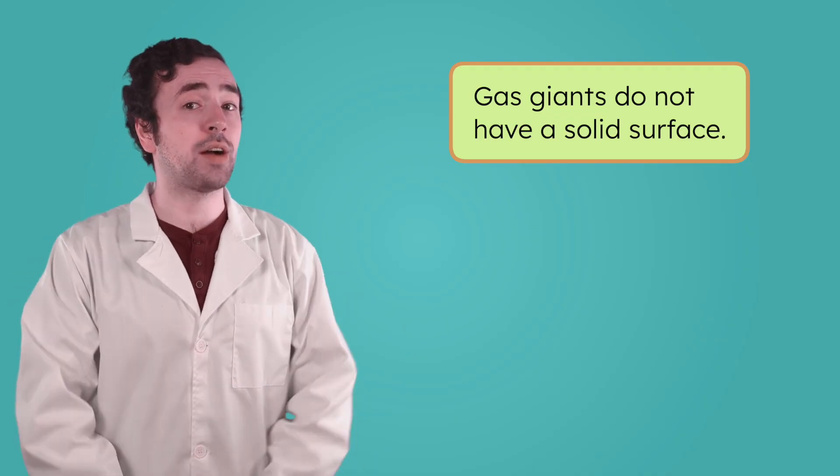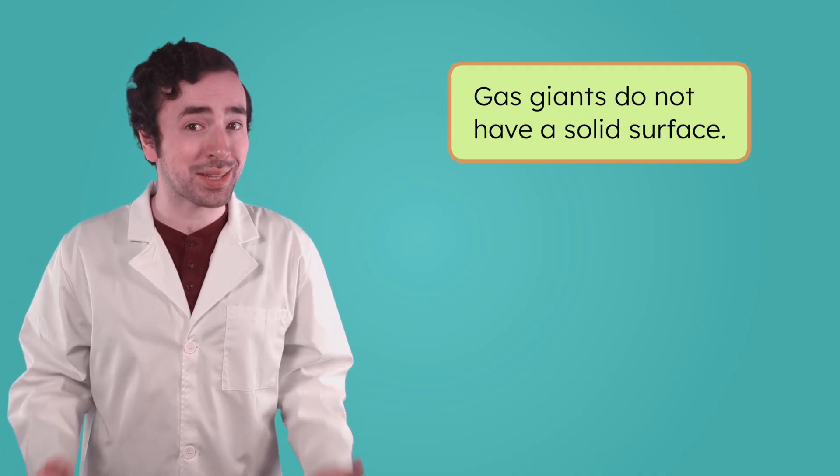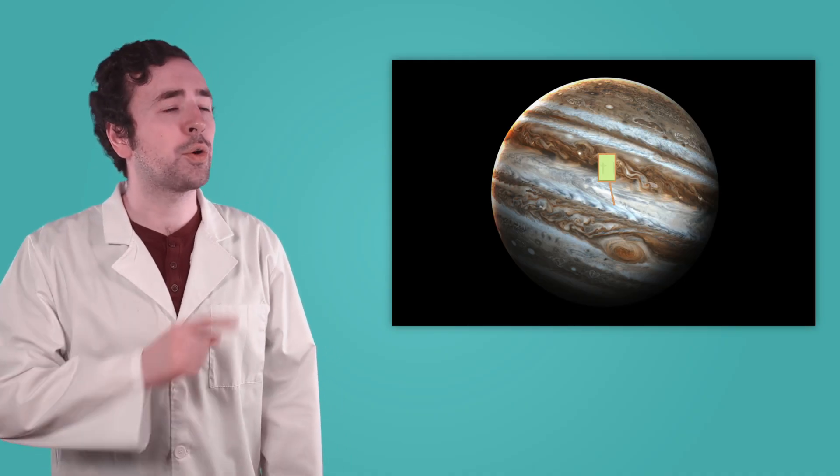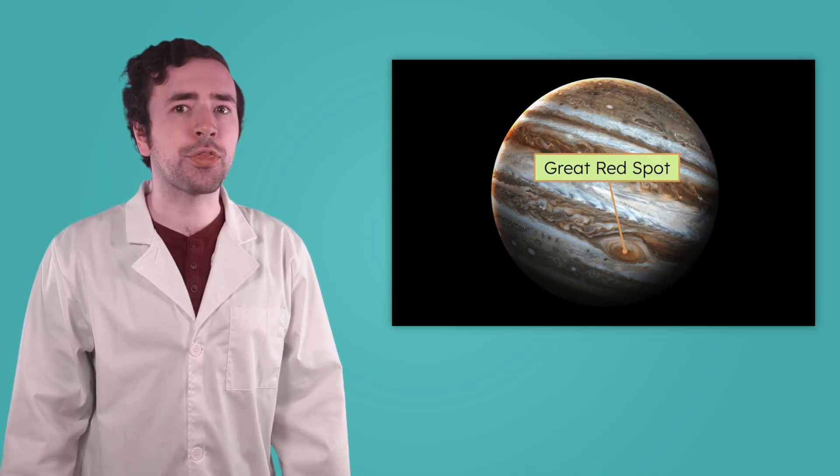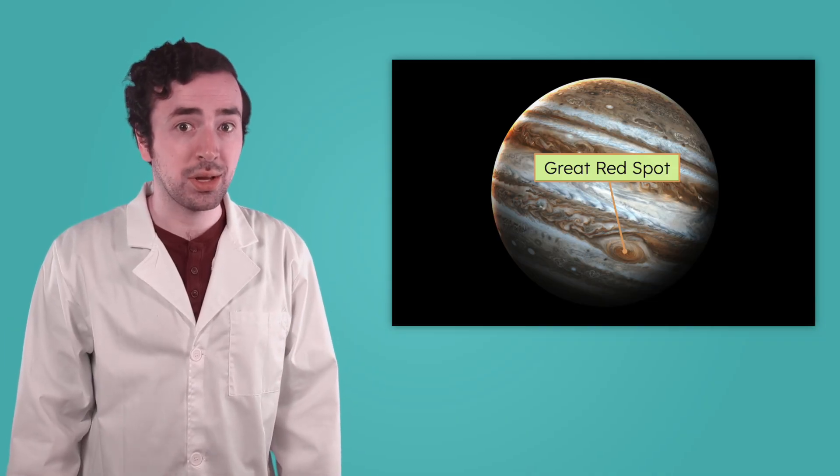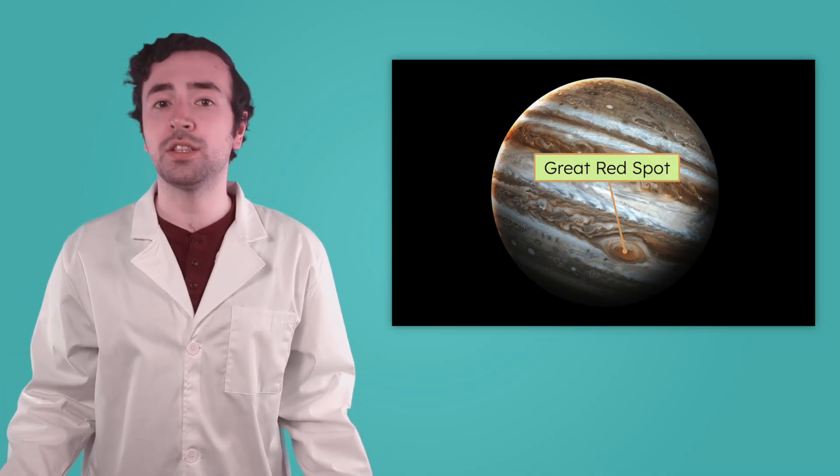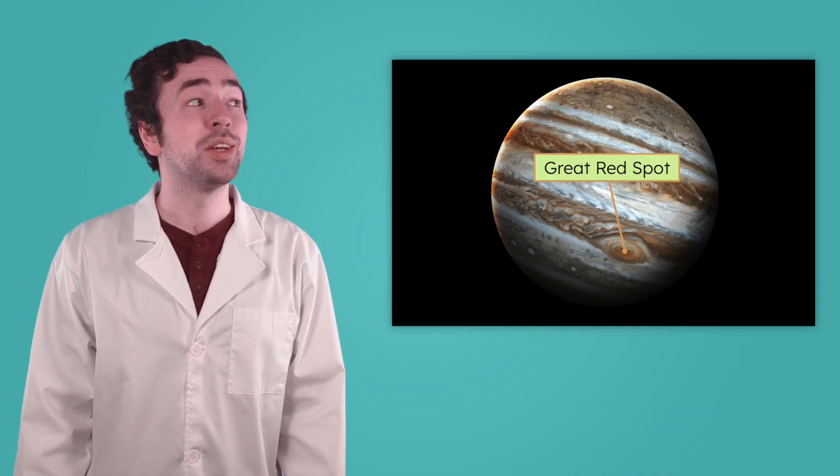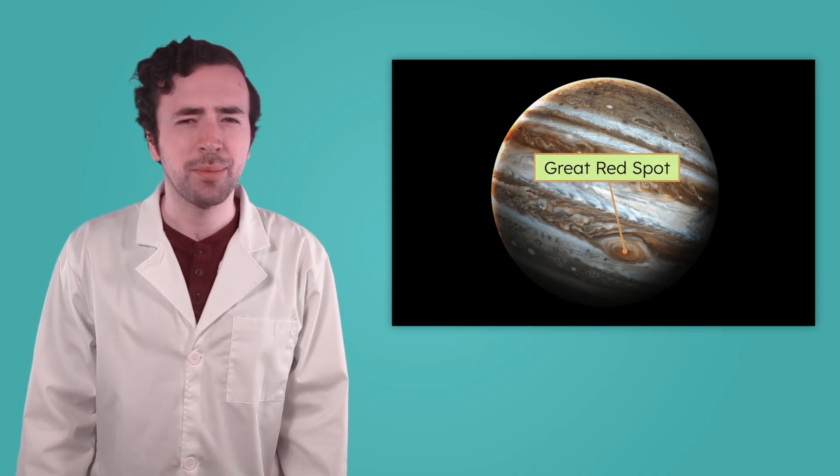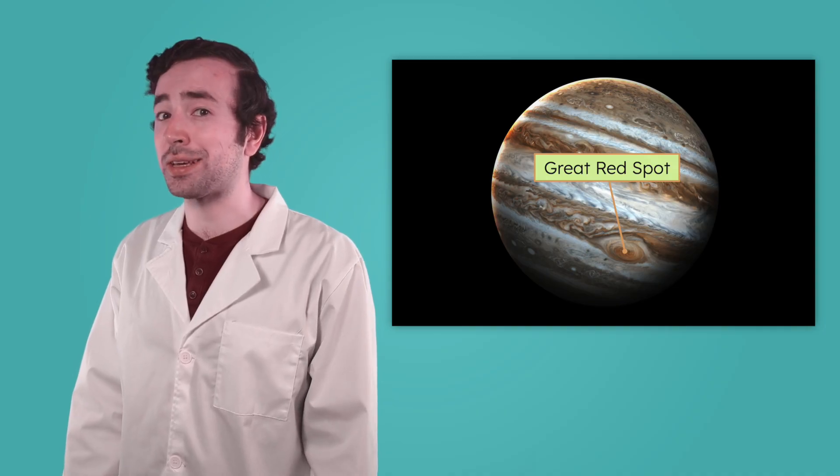If you could travel to Jupiter, there wouldn't be any ground for you to stand on. It also wouldn't be a very relaxing place to visit. Jupiter's atmosphere is full of powerful storms. The most famous one is called the Great Red Spot. This storm has been raging for over 300 years. So, with its massive size, dozens of moons, and extreme storms, Jupiter is one wild planet. But it's not the only gas giant in our solar system.